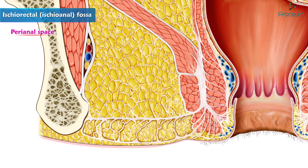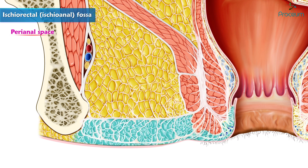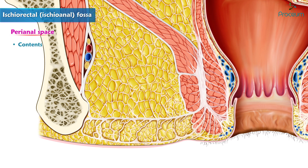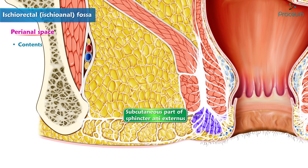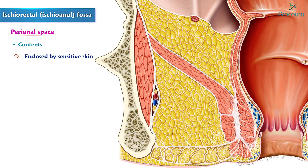The perianal space is subdivided into numerous compartments by fibroelastic septum. The fat in the perianal space is tightly arranged into small loculi. The infection in this space causing perianal abscess is therefore very painful. Contents of the space include the subcutaneous part of the sphincter ani externus muscle, the external hemorrhoidal venous plexus, and fat. It is enclosed by sensitive skin and prolongations of the longitudinal muscle of the bowel.